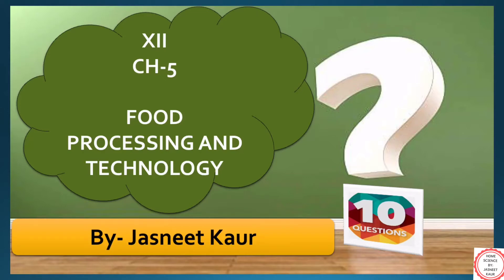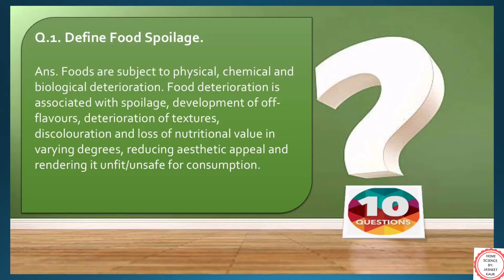So without wasting time, let's begin with our very first question: define food spoilage. Physical, chemical and biological factors are subject to cause deterioration in foods. This decaying of foods is associated with spoilage. Ways of spoilage could be loss of flavor, loss of texture, discoloration of food and loss of nutritional value in foods, which further makes it unsafe for human consumption.